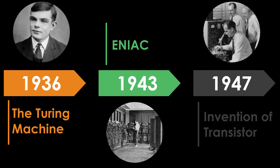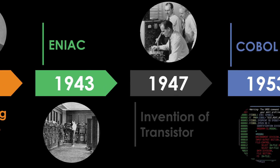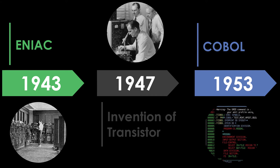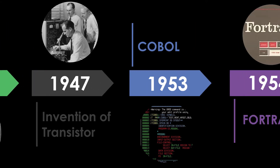It fills a 20 by 40 foot room and has 18,000 vacuum tubes. In 1947, William Shockley, John Bardeen, and Walter Brattain of Bell Laboratories invent the transistor. In 1953, Grace Hopper develops the first computer language, which is known as COBOL.